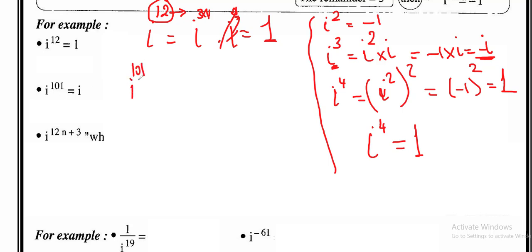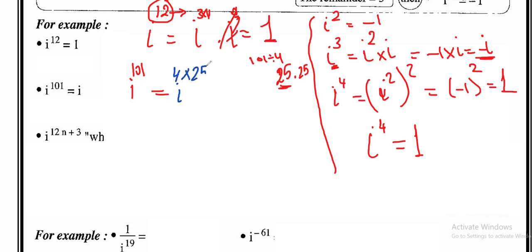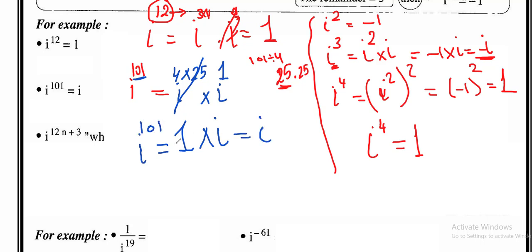Now i¹⁰¹. Is 101 a multiple of 4? Let's see. I will divide 101 by 4 in the calculator. The answer will be 25.25. I take the whole number, which is 25. So 4 × 25 = 100. i¹⁰¹ = i¹⁰⁰ × i¹ = (i⁴)²⁵ × i = 1 × i = i. The remainder from 101 ÷ 4 is 1, so the answer of i¹⁰¹ = i.